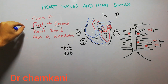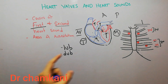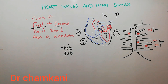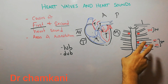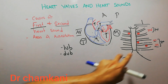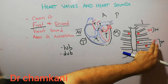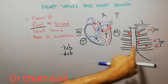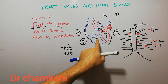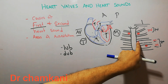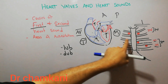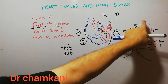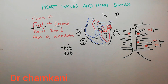So the first heart sound has two components — the mitral and the tricuspid. To hear the first heart sound, the stethoscope should be placed in the fourth or fifth intercostal space. For the tricuspid component, it should be placed in the fourth intercostal space adjacent to the sternum, and for the mitral valve sound, in the mid-clavicular line in the fifth intercostal space.